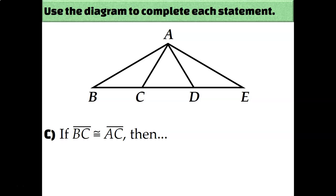What if side BC is congruent to side AC? For this problem, I'm focusing on the triangle on the left side of the diagram. It's an isosceles triangle because it has two congruent sides, so it must also have two congruent angles. Specifically, angle B must be congruent to angle CAB.